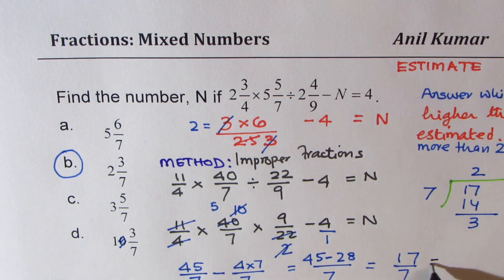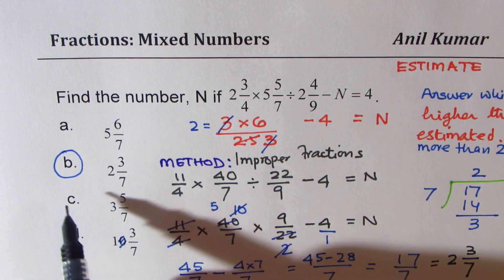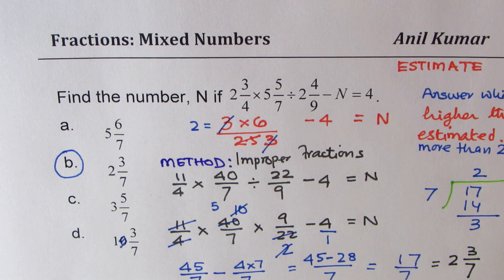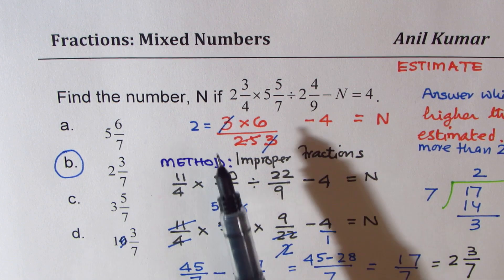Some students don't even understand this step. How to get back from improper to mixed numbers. So, 17 divided by 7 goes 2 times. You get 14. Remainder is 3. And therefore, the answer is, as expected, 2 3/7. Option B. Perfect. So, I hope these steps are clear.